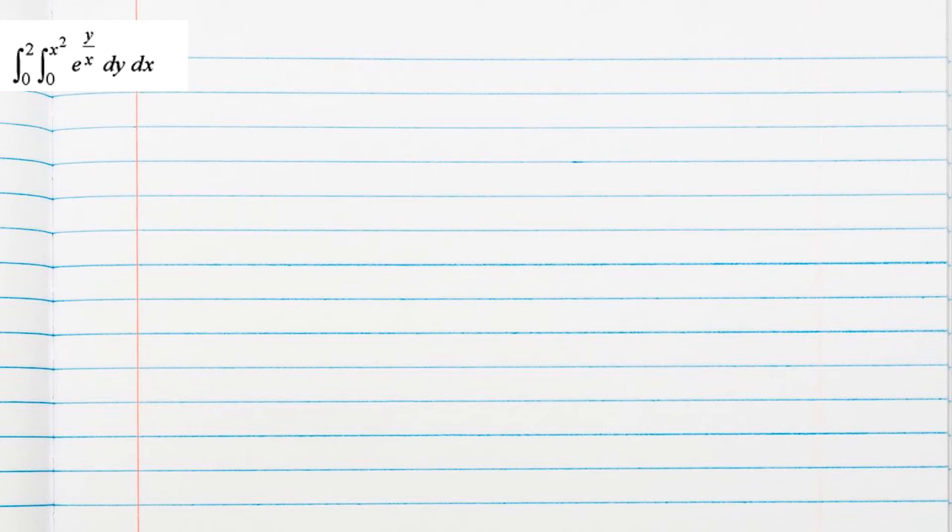In this question, double integration is there, so we have to check the order first. dy by dx means first we should integrate with respect to y.